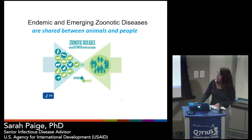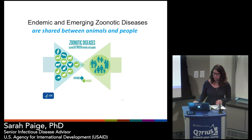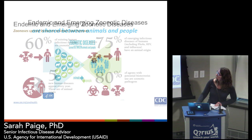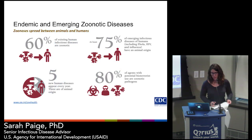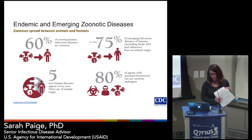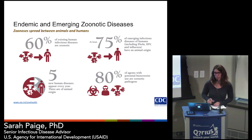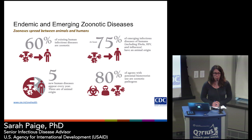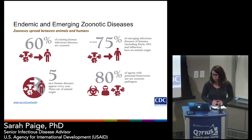Some stats on endemic and emerging zoonotic diseases: 60% of existing infectious diseases are zoonotic, and at least 75% of emerging infections are from animal sources. Five new human diseases appear every year and three of those are of animal origin. And 80% of agents with bioterrorist potential are from animal sources. The CDC has some great visuals on these.